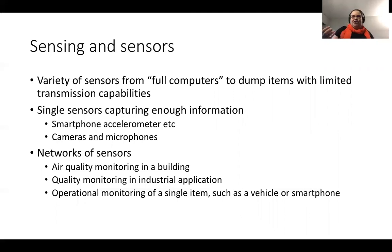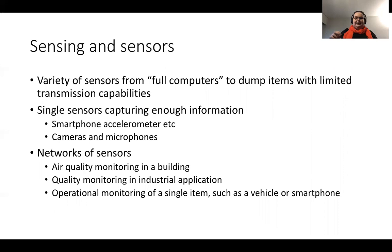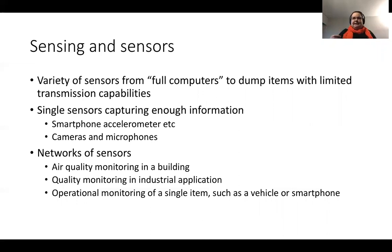Some sensors are fine alone — a step counter on a smartphone is sufficient with just one sensor. But some cases require a network of sensors. A good example is air quality monitoring in a building: we need multiple sensors collecting data at different points and different rooms. If you make an adjustment in air conditioning based on a room that's empty, it doesn't help the room that's full of people. Different quality control sensors can get broken or produce misleading data, and we can correct other sensors based on the network of sensors working together.